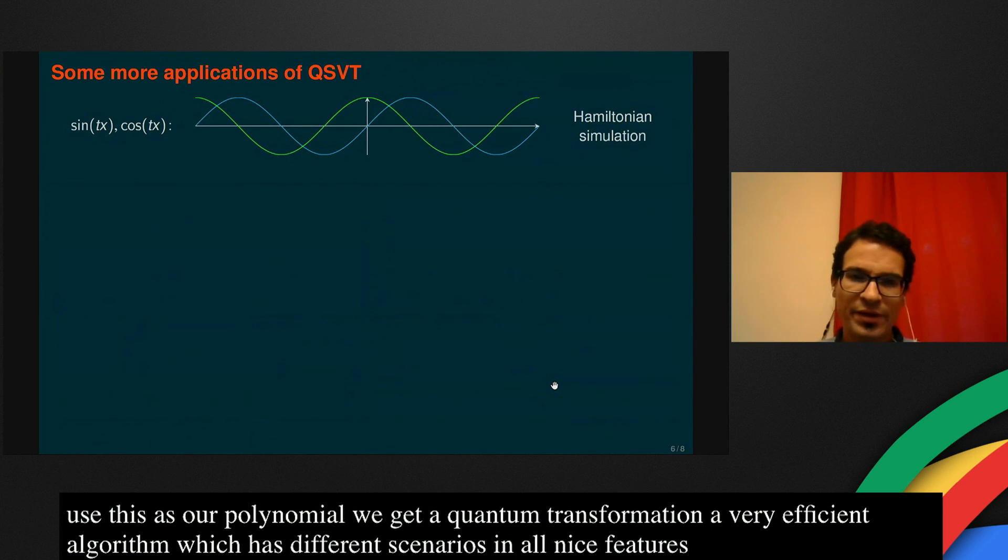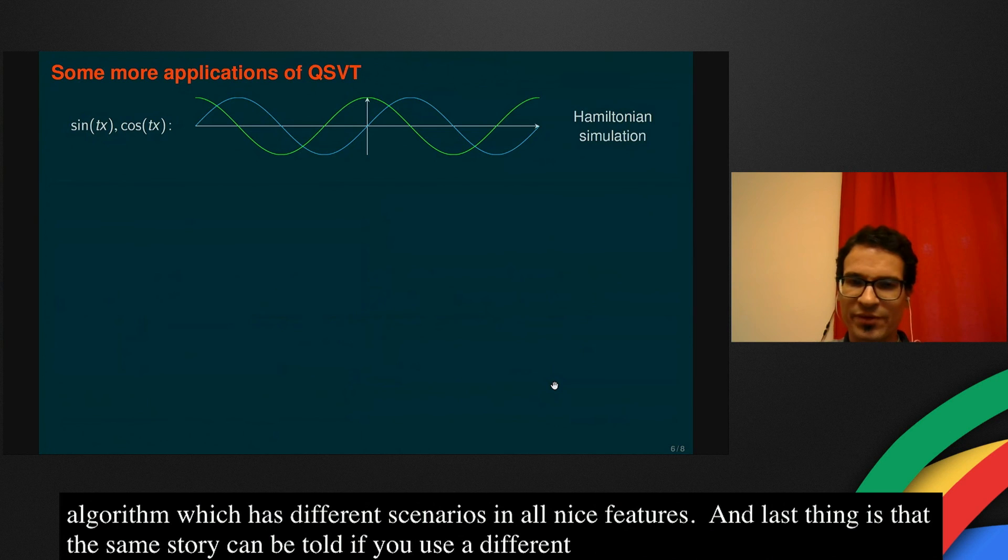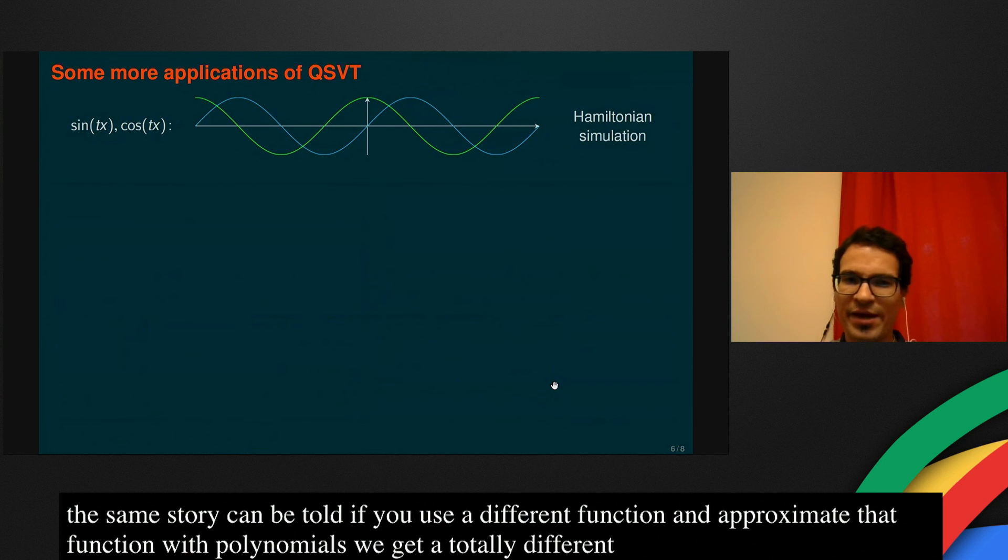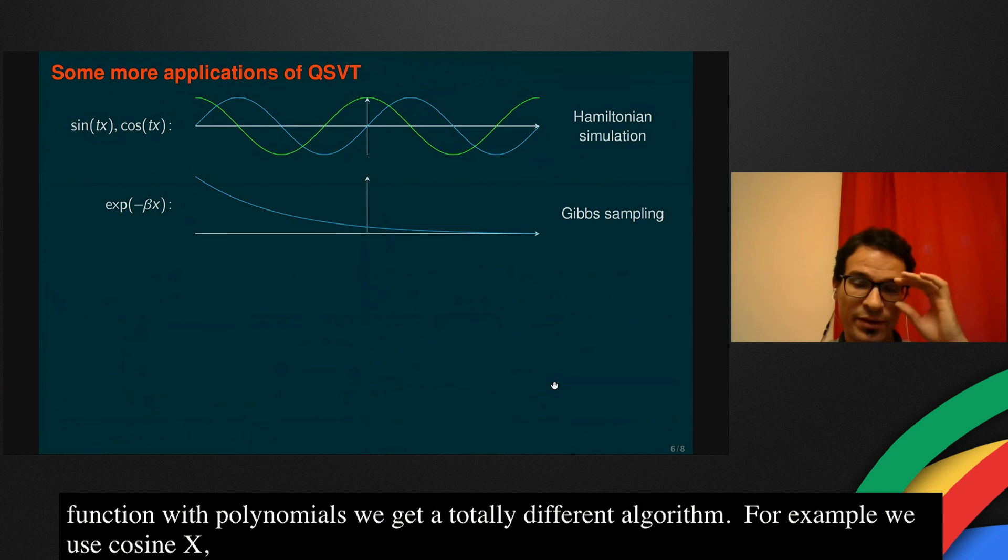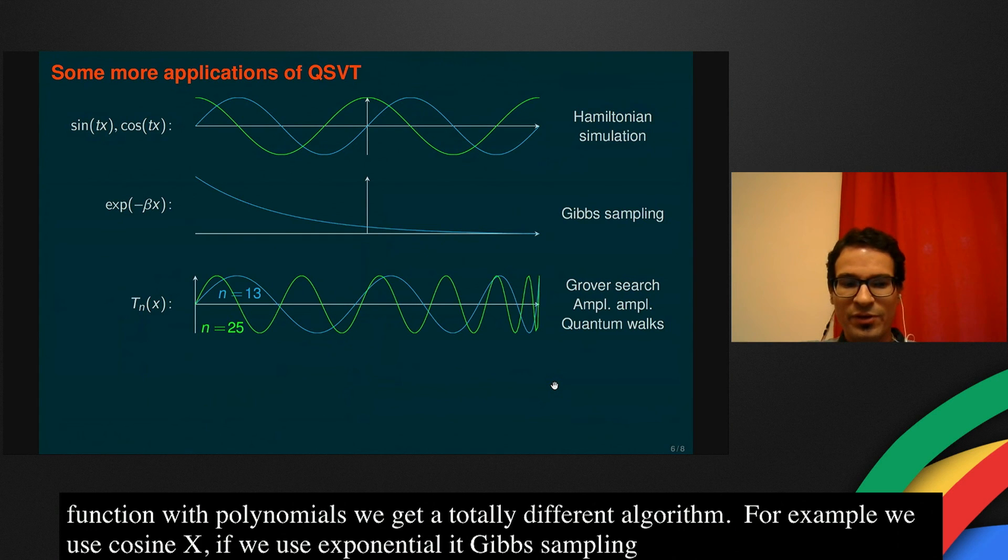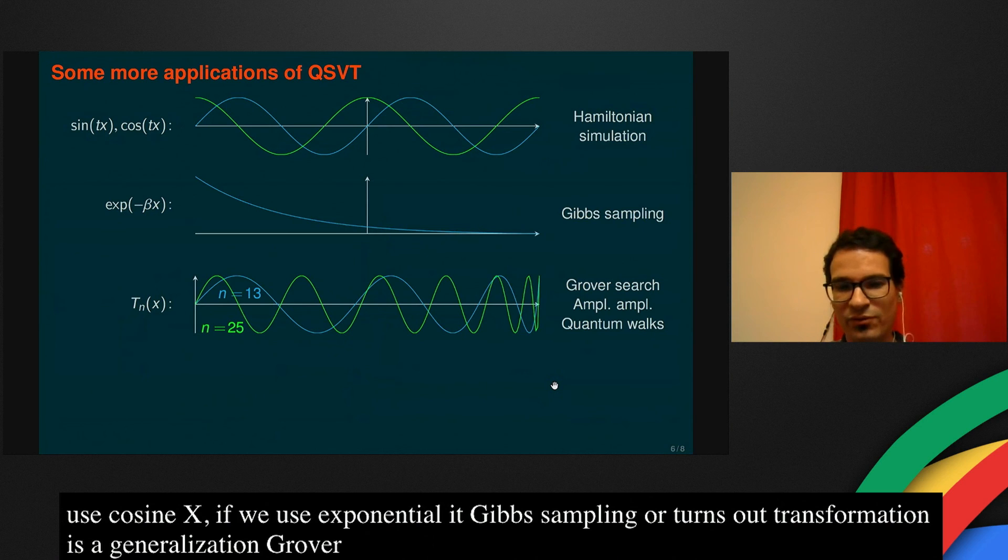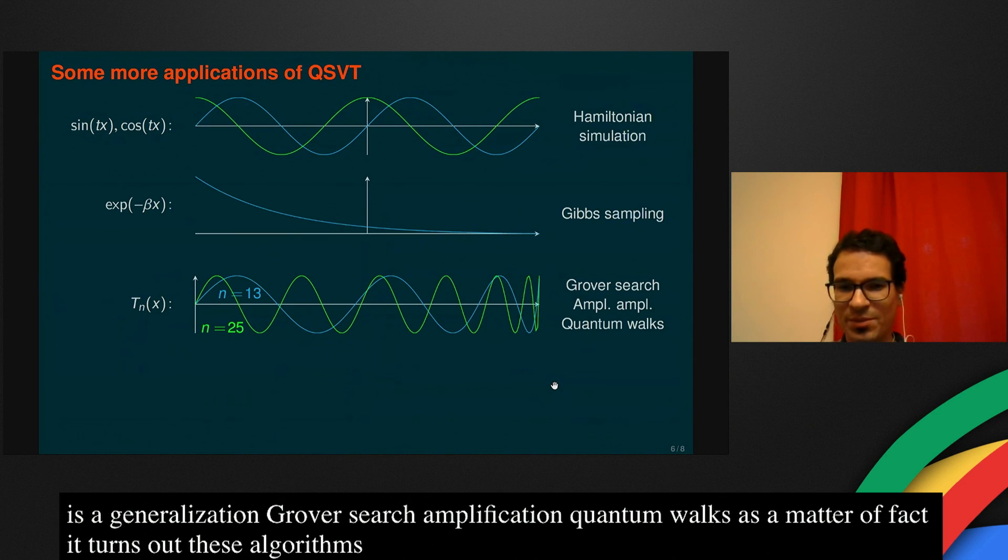The nice thing is that the same story can be told if you just use a different function and approximate that function with polynomials, then we get a totally different algorithm. For example, if we use sine x and cosine x, we get Hamiltonian simulation. If we use an exponential decay, then it gives rise to Gibbs sampling. Or it turns out singular value transformation is a generalization of Grover's search and amplification or quantum walks, as a matter of fact, where if you look at these algorithms from this point of view, then it turns out that these algorithms just do singular value transformation according to a Chebyshev polynomial.